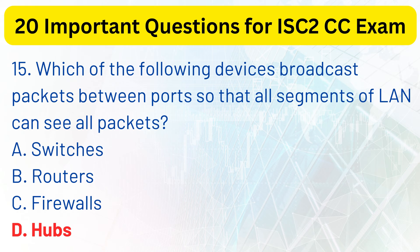Explanation. Hubs broadcast packets between ports so that all segments of a LAN can see all packets, while a switch can forward packets between network segments.